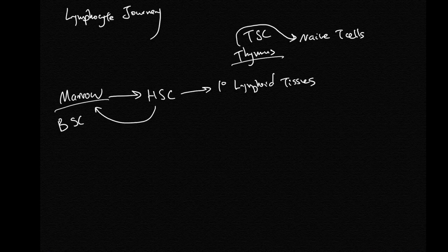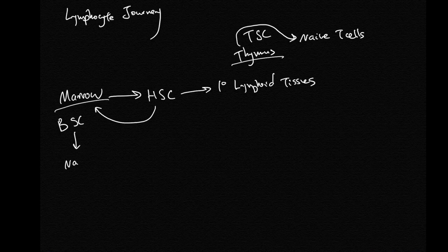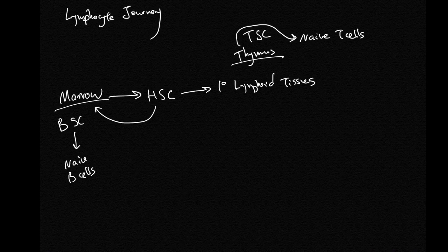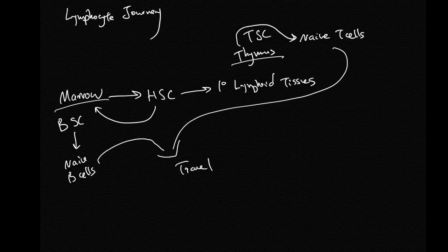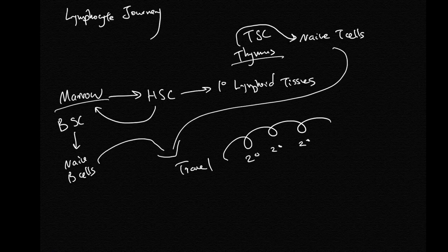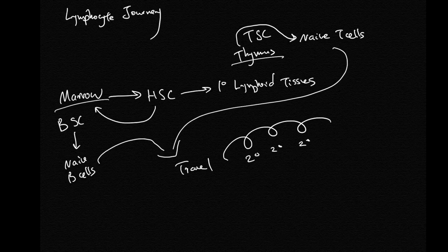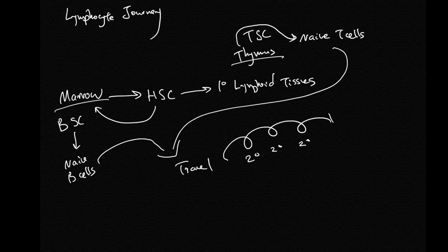I have T cells here and naive B cells, and these naive lymphocytes will then travel throughout the body, stopping at secondary lymphoid tissues including lymph nodes, adenoid, tonsil, spleen, appendix, Peyer's patches, and so on.